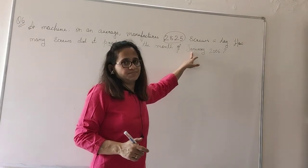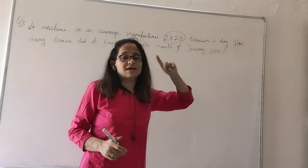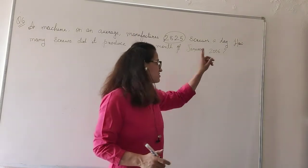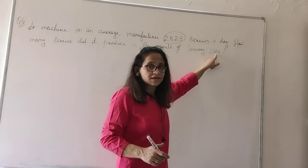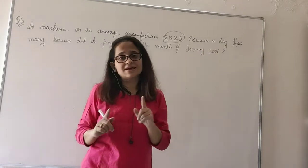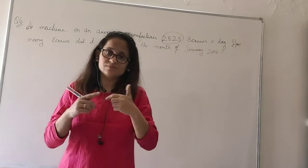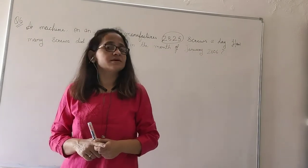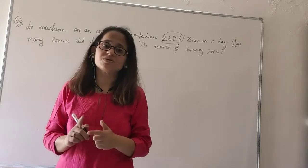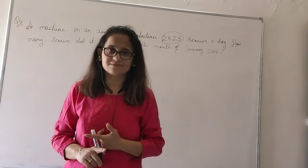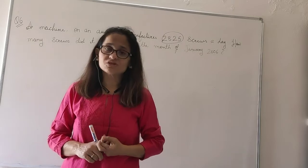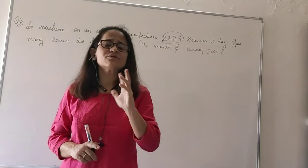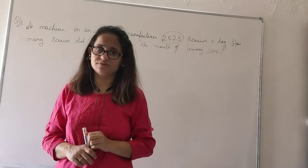Then we have to think whether 2006 is a leap year. If yes, it is a leap year, then it will have 29 days, so we will multiply with 29. If it is not a leap year, then February will have 28 days, so we will have to multiply with 28. That could be the twist in the question.